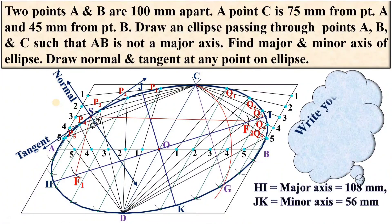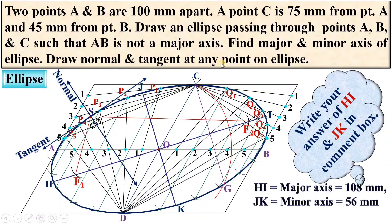This is a really interesting problem. We have completed three different tasks: drawing the ellipse, finding the major and minor axis, and drawing the normal and tangent. In the examination, only the ellipse, normal and tangent should be drawn dark — the remaining construction should be as light as possible. Write your answers for HI (major axis) and JK (minor axis) in the comment box. Thanks for watching — please like the video to appreciate it.